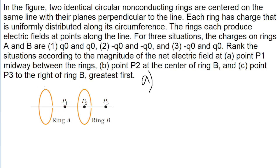For scenario two, where both rings of charge are negative, we basically have the exact same situation. The only difference is that since it's negative, the electric field lines are pointing towards the rings everywhere. At P1, there's an electric field pointing towards the ring on the left, and from the right ring, the electric field lines are pointing towards that ring as well. So we have the exact same scenario as with scenario one — the electric field lines from the two rings are pointing in opposite directions at the center point, and they cancel each other out. So once again, there's a net field of zero at point P1.